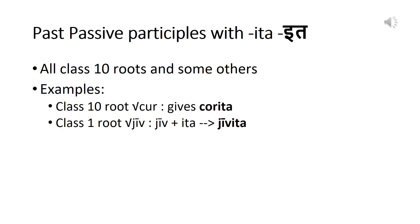All class 10 roots form the past passive participle with 'ita'. It uses the same verb stem to which the personal endings are added for conjugation. Some other roots also form the past passive participle with 'ita', and here they use the unstrengthened root. Examples are given here.